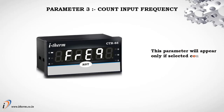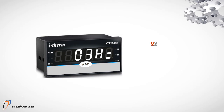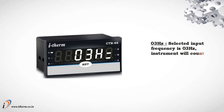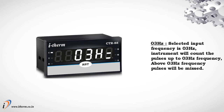Parameter 3: count input frequency. This parameter will appear only if count input is selected as DC. If 03 Hz is selected, the instrument will count pulses up to 03 Hz frequency. Above 03 Hz, pulses will be missed.